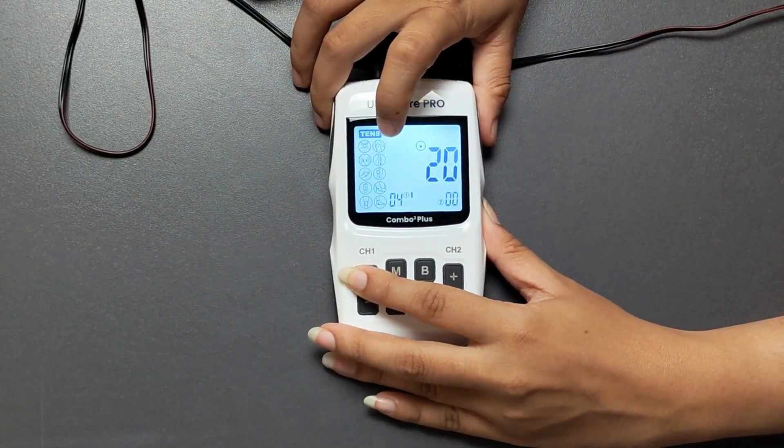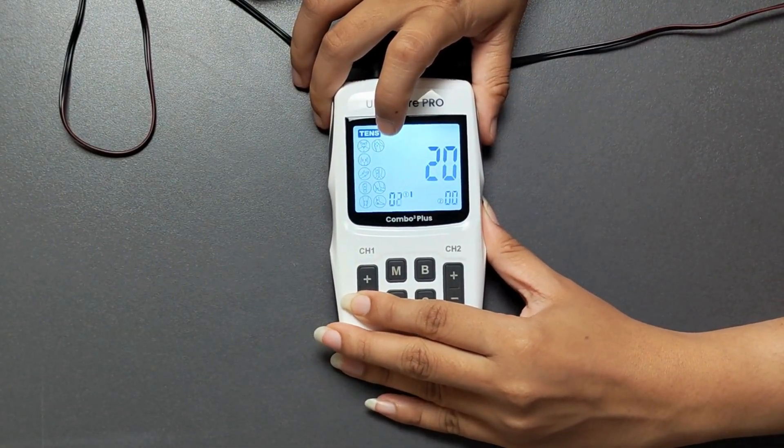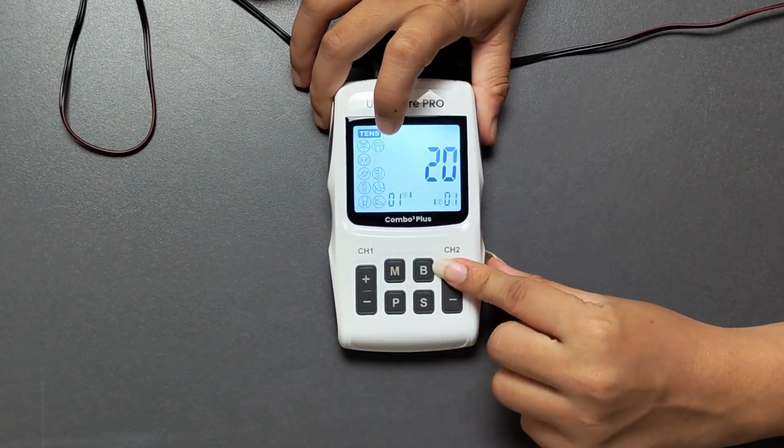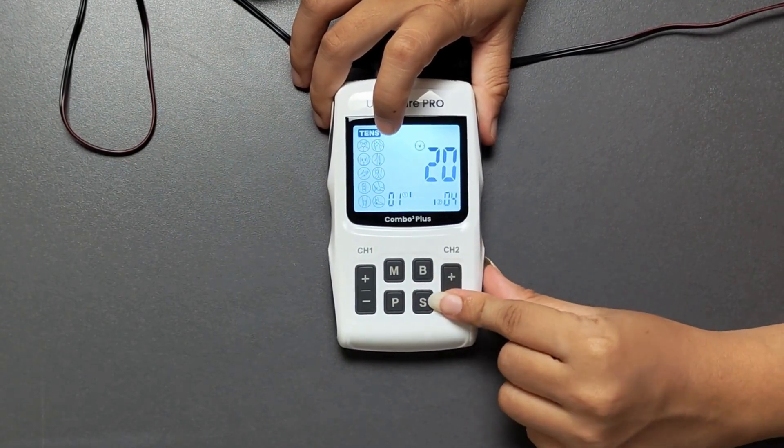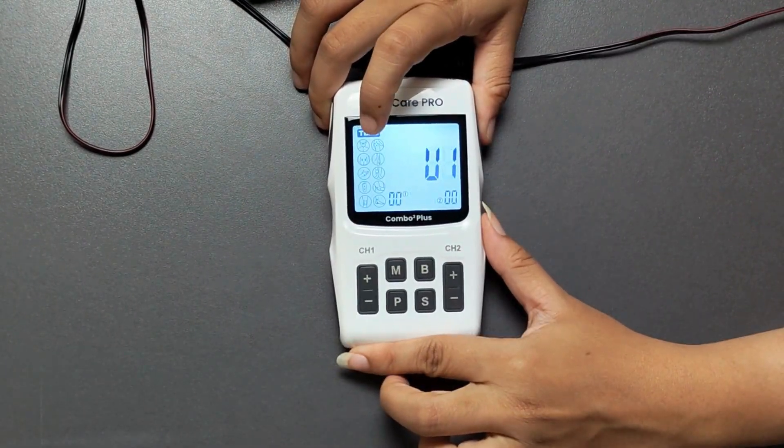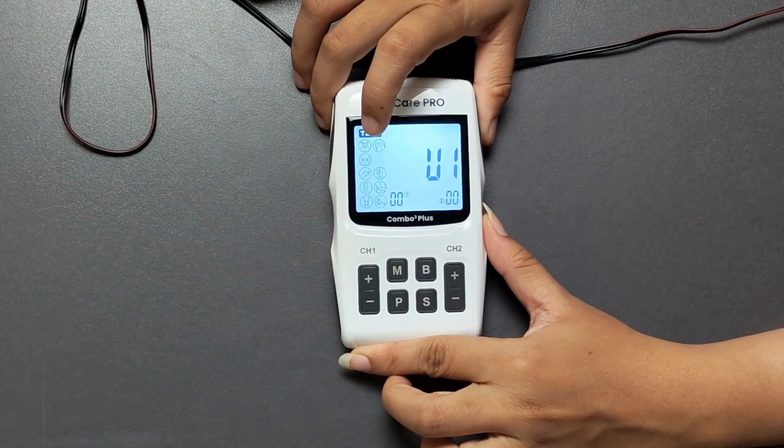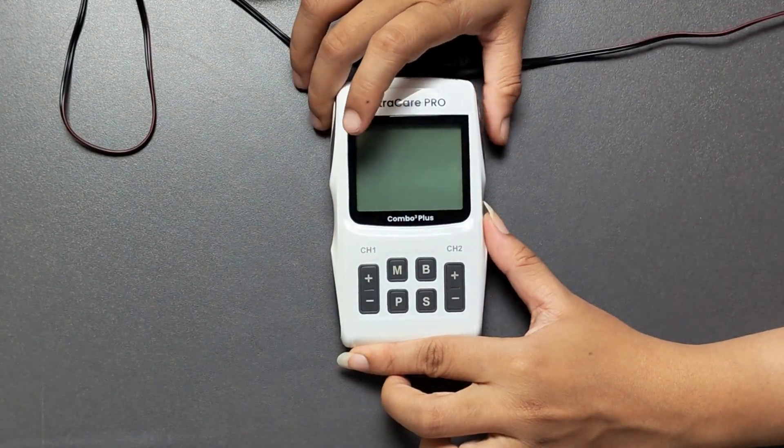Now adjust the intensities for channel 1 and channel 2 using plus and minus buttons. For TENS, EMS, and Russian current therapy, intensity can be set from 00 to 90, and for IFT, intensity can be set from 00 to 60.